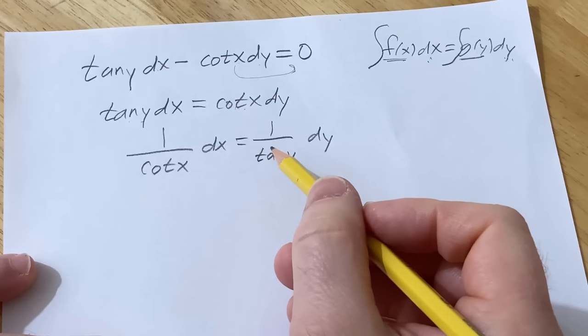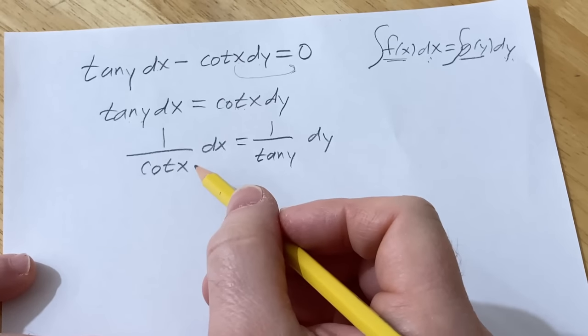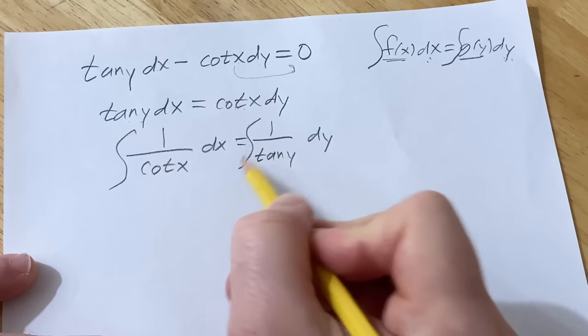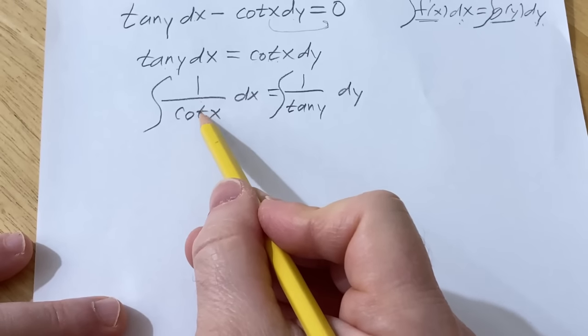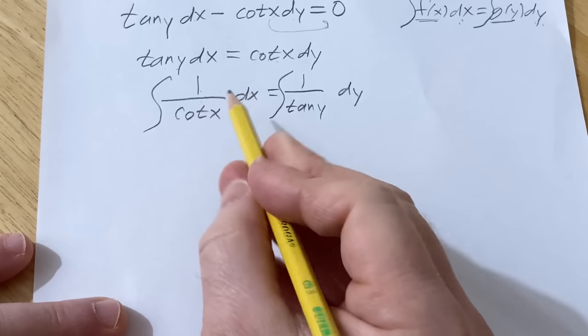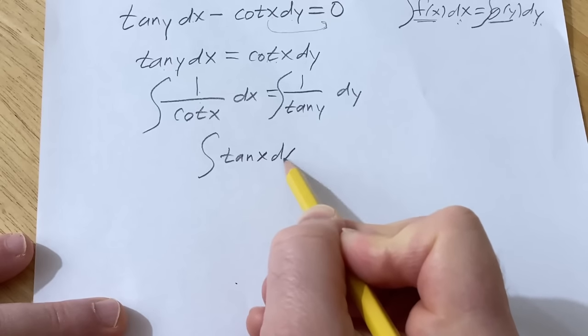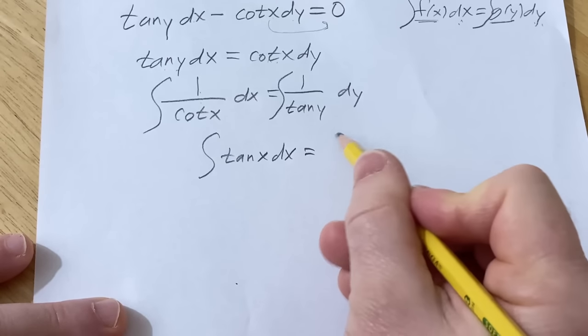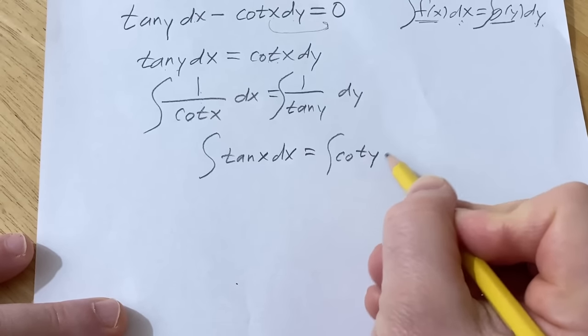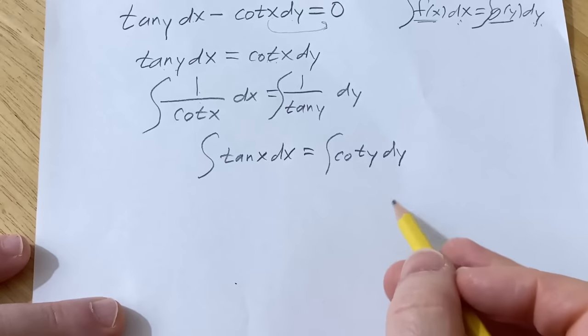And we want to integrate this. So this needs to be a little bit cleaner. So we want to write something that we know how to integrate. Well, 1 over cotangent is tangent. And 1 over tangent is cotangent. And now we can integrate both of these.